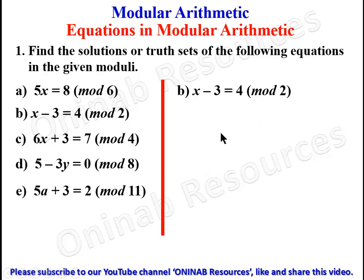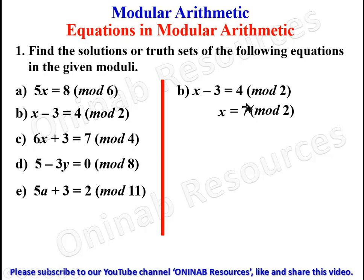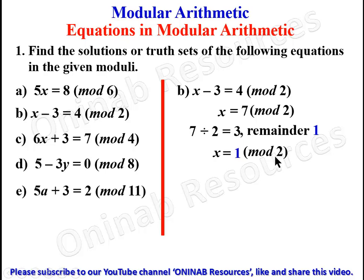Problem (b): x - 3 ≡ 4 (mod 2). We solve normally — take -3 to the right-hand side, so x ≡ 7 (mod 2), since 4 + 3 gives 7. We then find the equivalent modulus of 7 in mod 2: 7 divided by 2 gives 3 remainder 1, so x ≡ 1 (mod 2).